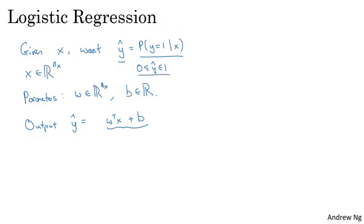So in logistic regression, our output is instead going to be y hat equals the sigmoid function applied to this quantity. This is what the sigmoid function looks like. If on the horizontal axis I plot z, then the function sigmoid of z looks like this. So it goes smoothly from 0 up to 1.